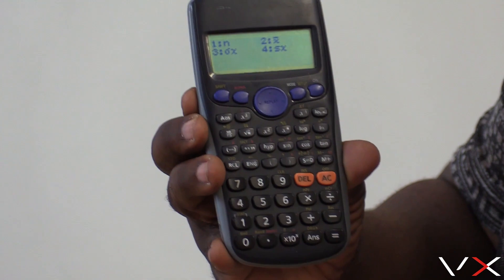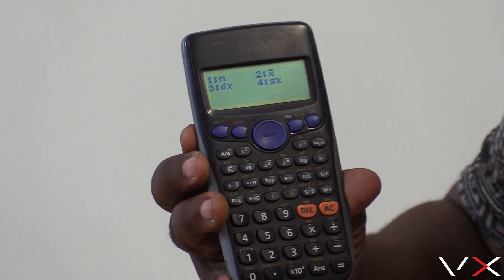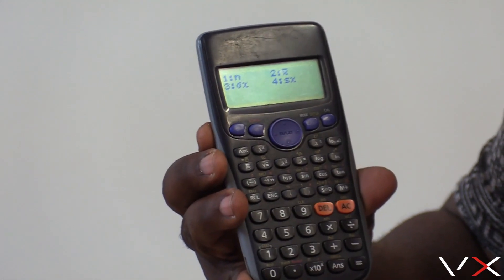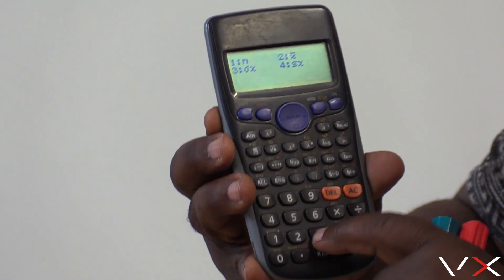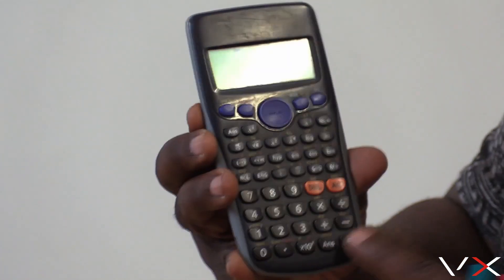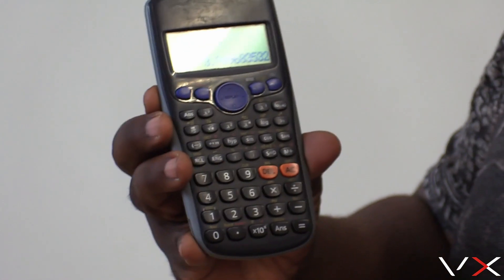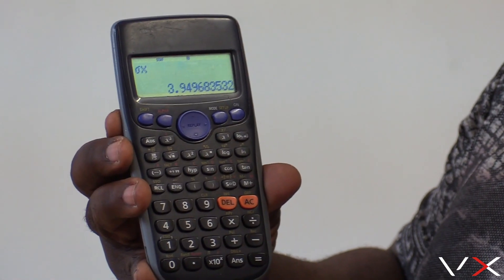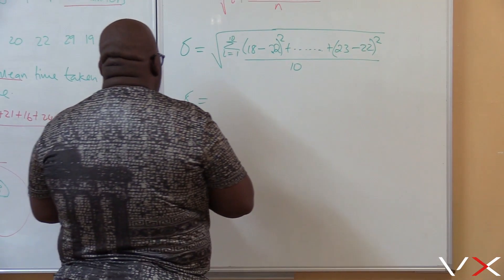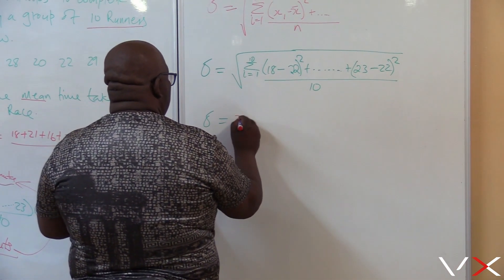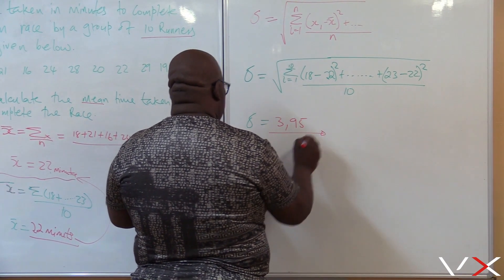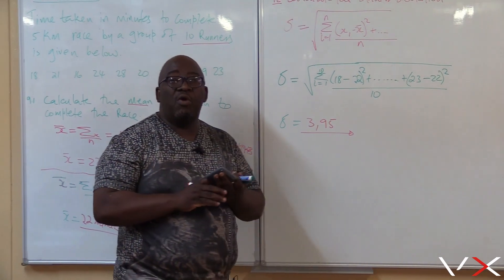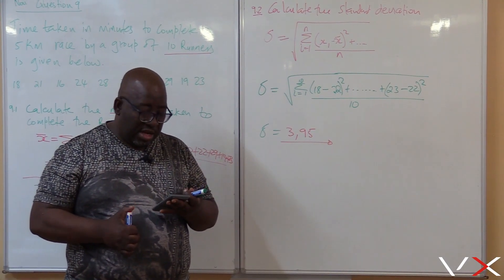Press number four for VAR. Now we're looking for standard deviation, which is number three. Press three, then press equals. The answer is 3.949 — you can write 3.95 correct to two decimal places. So our standard deviation is 3.95.